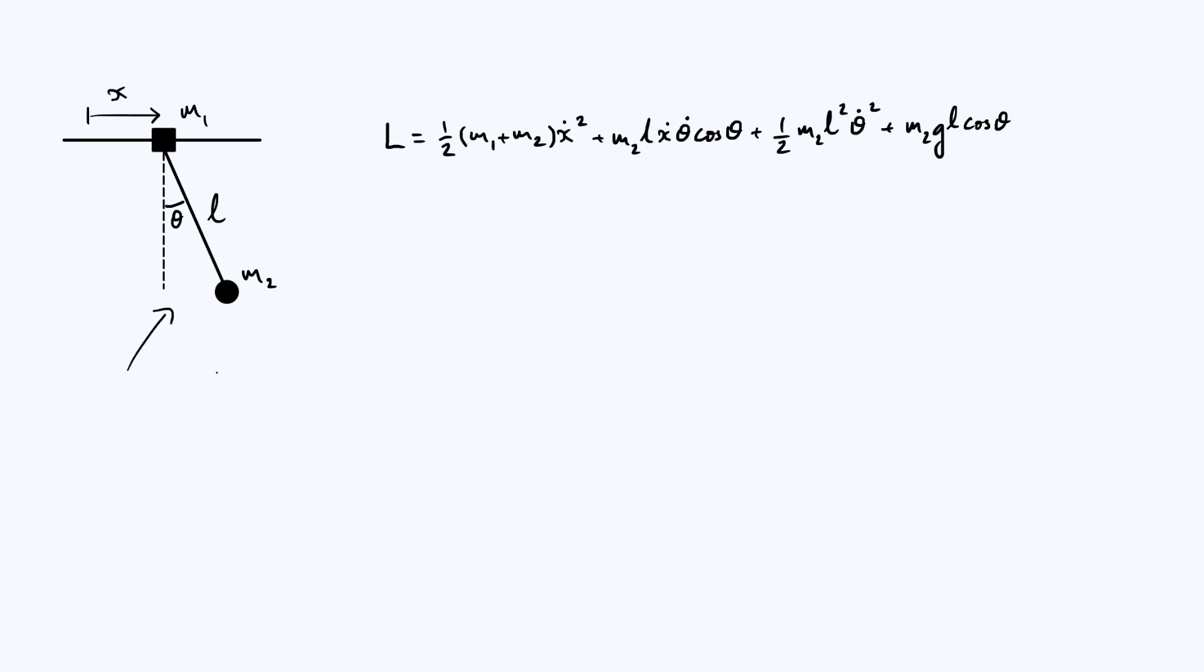And what we were doing in that video was looking at small oscillations of the system. What I'd like to do this time is revisit the same system, but remove the assumption that it's performing small oscillations and see what we can learn about the general motion of this pendulum. However, it turns out that we can learn something about the trajectory that the bob of the pendulum follows.